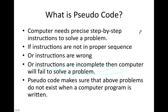Pseudocode makes sure that these problems — instructions in the proper sequence, correct instructions, and complete instructions — exist when a computer program is written. So none of these problems should exist if a proper pseudocode has been done.